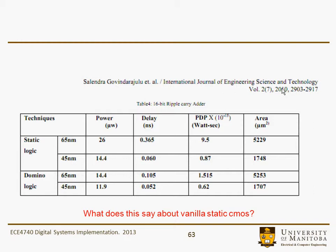This is a comparison from 2010 that showed static logic and domino logic for a ripple carry adder in two different technologies: 65 nanometers and 45 nanometers. Focusing on the 45 nanometer case, there really isn't a lot of difference between static and domino logic. Delays are pretty comparable, the power-delay product is pretty comparable, and the area is pretty comparable. So static CMOS is certainly a contender even for high-speed logic blocks.